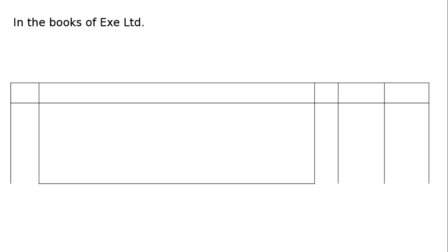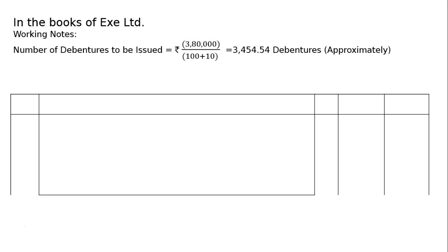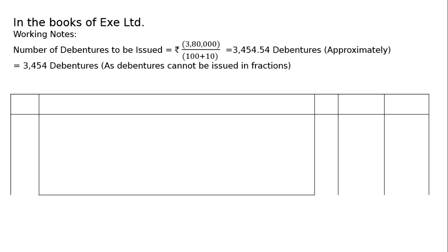Now the answer. In the books of EXE Ltd — first, working notes. Number of debentures to be issued: Rs. 3,80,000 is the purchase consideration and Rs. 100 is the face value per debenture, issued at a premium of 10% (premium is plus 10, discount is minus 10). That equals 3,454.54 debentures approximately. But debentures cannot be issued in fractions. Hence, the whole number — 3,454 debentures — is issued.